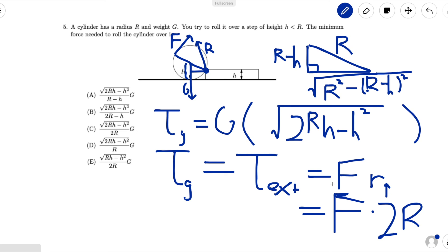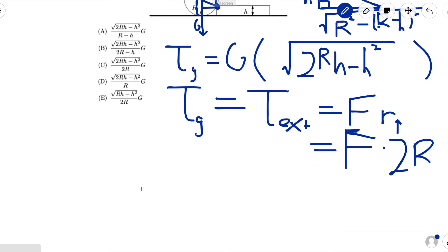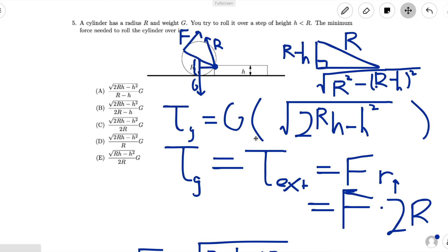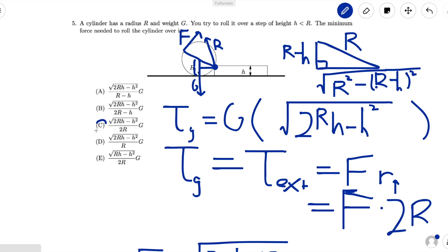And f times 2r is equal to g times the square root of 2rh minus h squared, which means that if we solve for that, we get f is equal to the square root of 2rh minus h squared, all over 2r, times g. Looking back at our answer choices, we see that this is in fact answer C. So we're done.